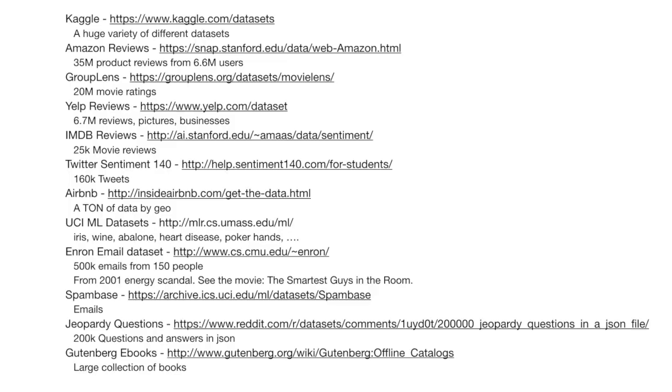Now let's look at some non-government related data sets. Kaggle, which is a huge data science competition website, publishes a whole bunch of different data sets. Some of them are actually cleaned up so you don't have to do any scrubbing of the data yourself; some are just raw data sets. Some have been used for competitions, others are just published for you to tinker around with. Some are retail-related like a Home Depot or Walmart data set, and some are more specific like Twitter data.